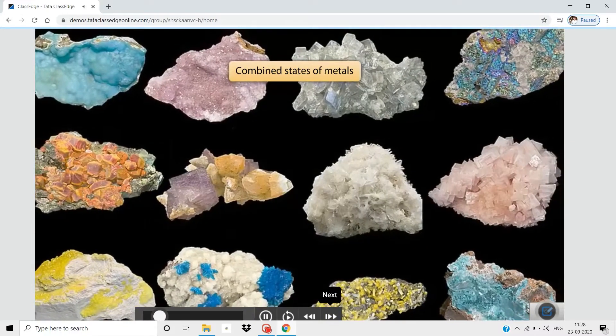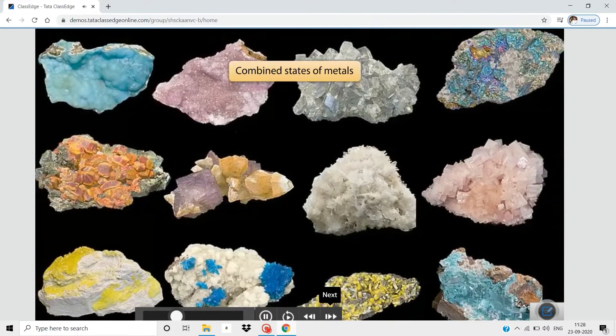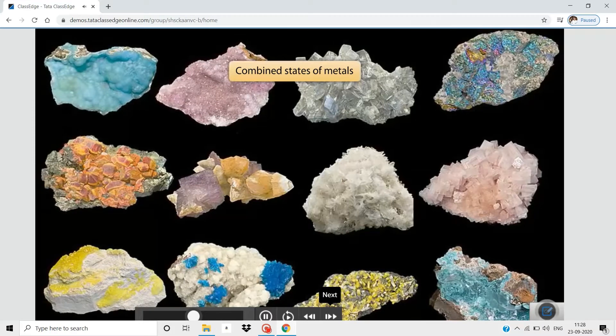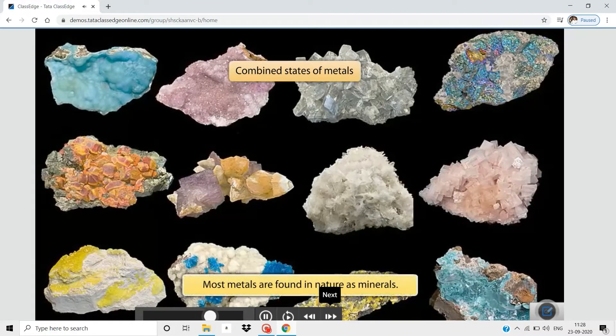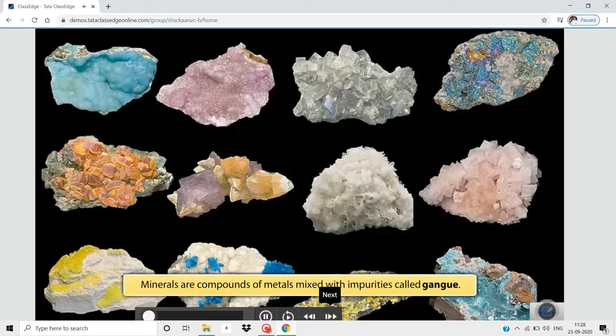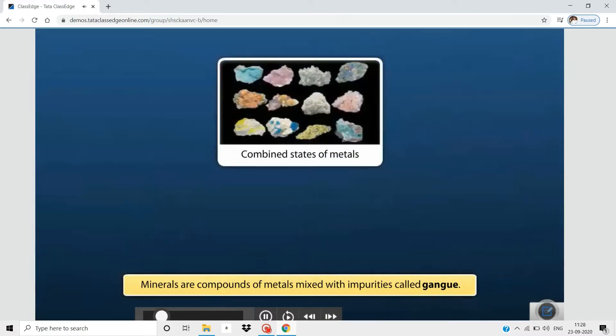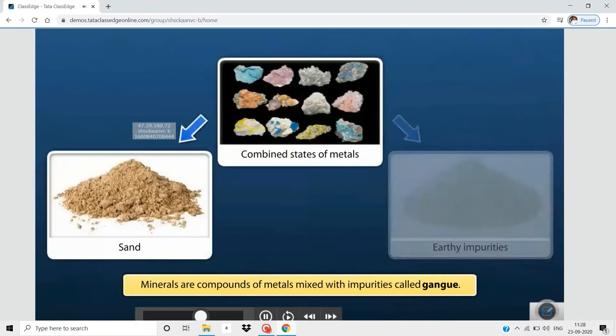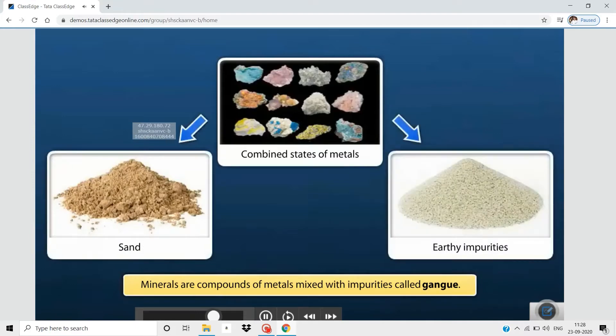Most other metals exist in combined states in combination with other elements. They are found in nature in the form of minerals. Minerals are compounds of metals mixed with certain unwanted materials, mostly in the forms of sand and earthy impurities. These impurities are called gangue.